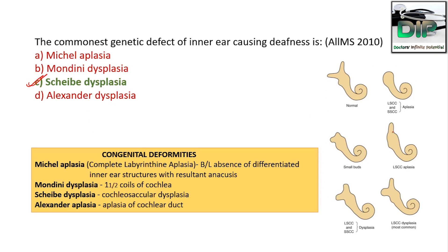Let's look at this picture showing the normal development of the inner ear structure. In one picture there is aplasia of the superior and lateral semicircular canals. In another picture there are short portions of the semicircular canals. In another picture there is superior semicircular canal but no lateral semicircular canal — aplasia of the lateral semicircular canal. In another picture there is dysplasia of superior and lateral semicircular canals. And in the last picture, the superior semicircular canal is formed properly but there is dysplasia of the lateral semicircular canal, and this is the most common.